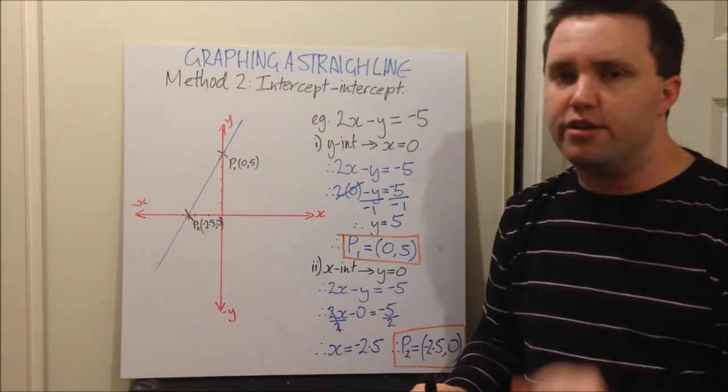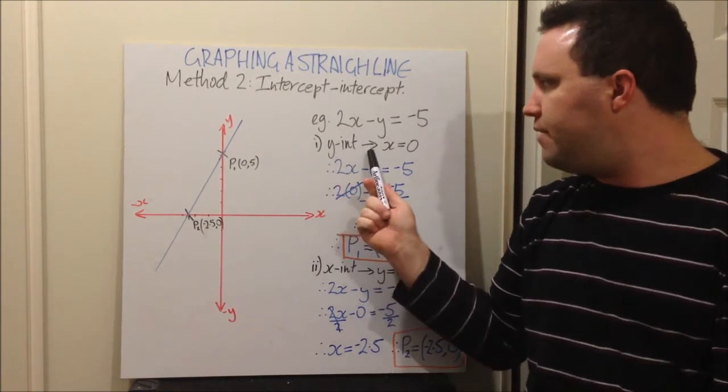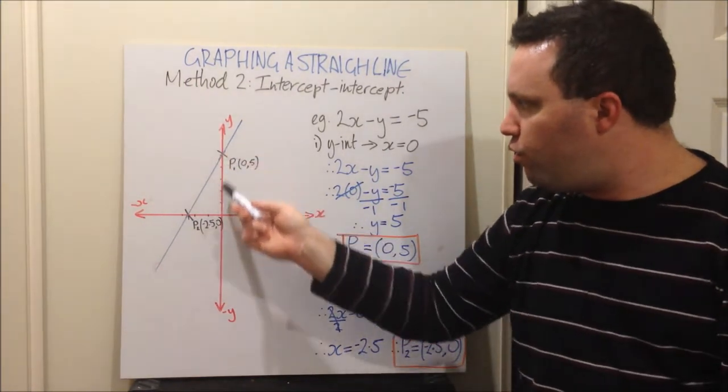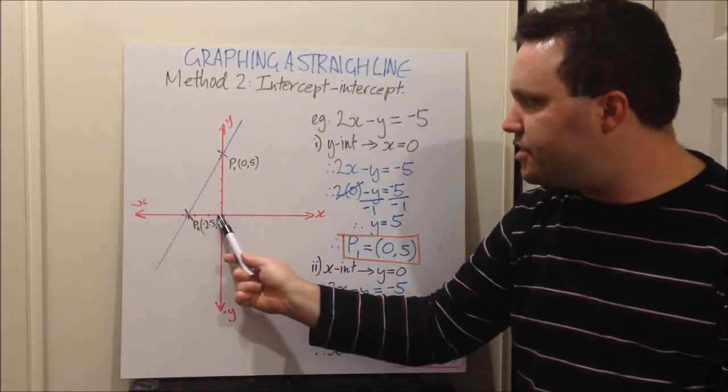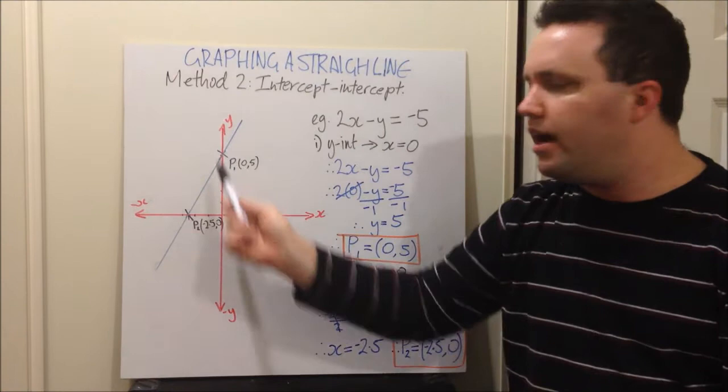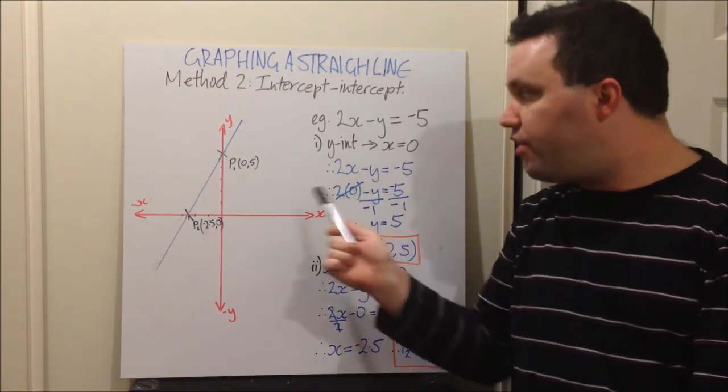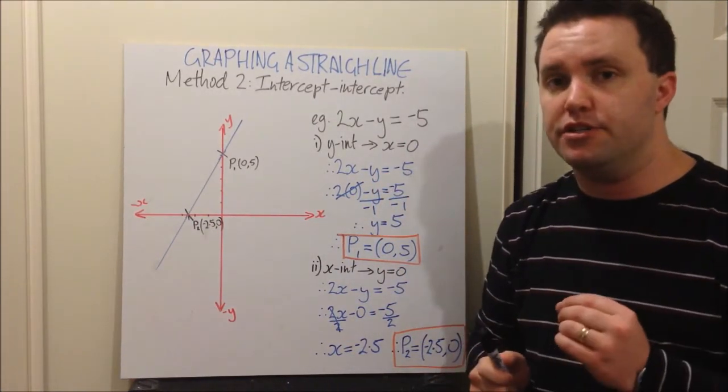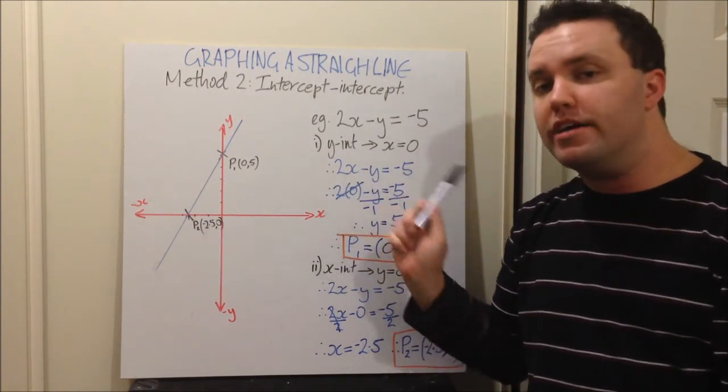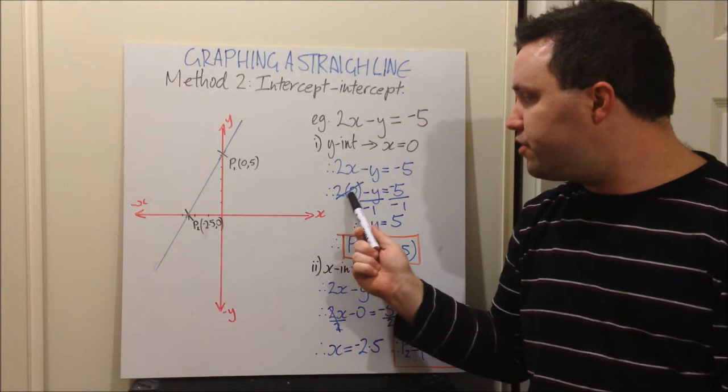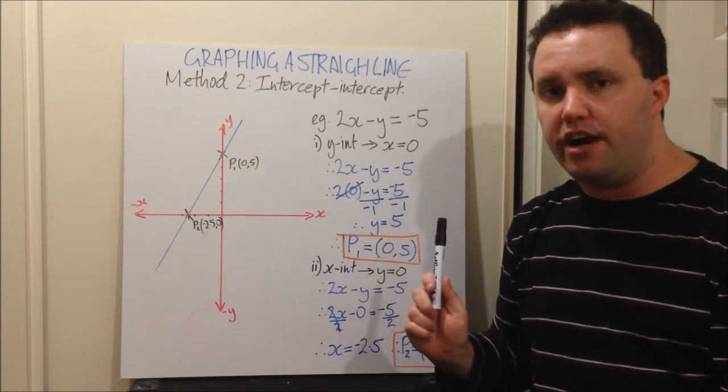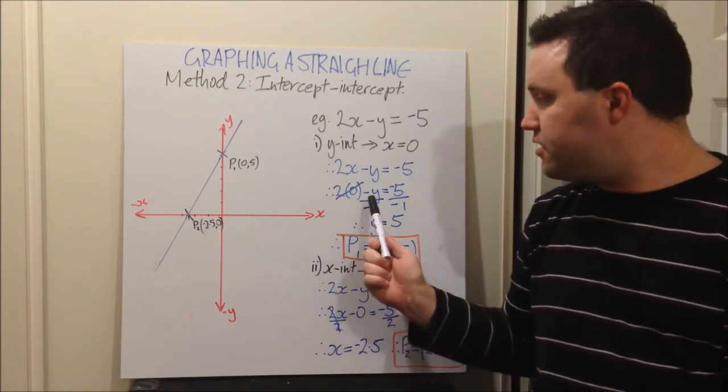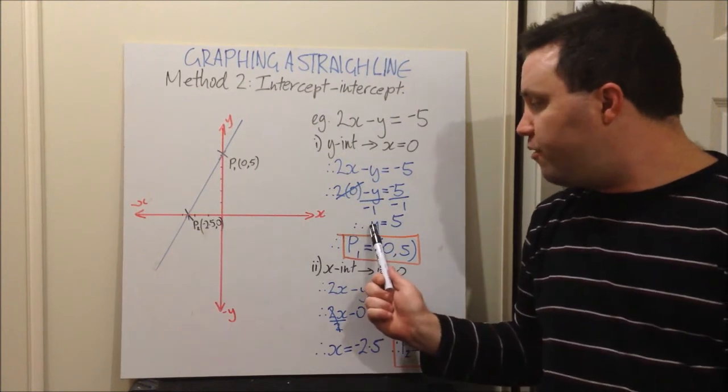Step number 1, find your y intercept. At my y intercept here, let's pretend we've already found it, all the way along the y axis x is 0. See, 0 is here, and so all the way along the y axis x is 0. We know that wherever the point is on the y axis, the x is always going to be 0. So we chuck x being 0 into our equation. Therefore, 2x minus y equals 5, substitute my 0. 2 times 0 minus y equals negative 5. I just want y on its own, I'm going to divide both sides by negative 1 so I don't have negative y anymore.